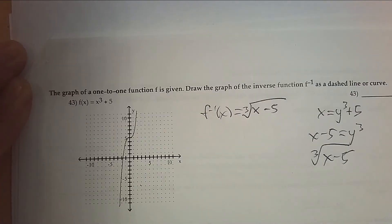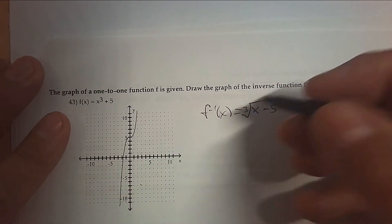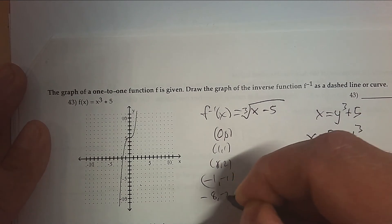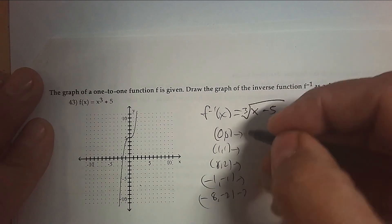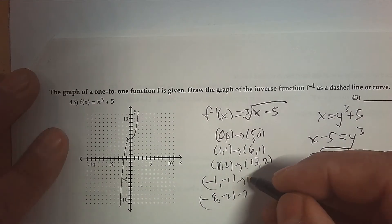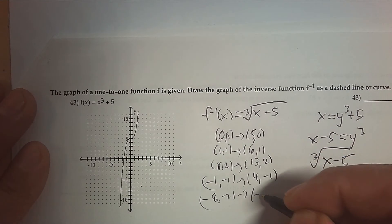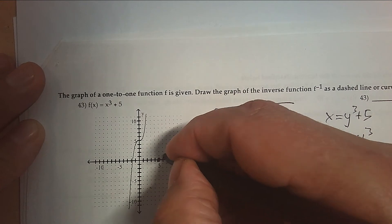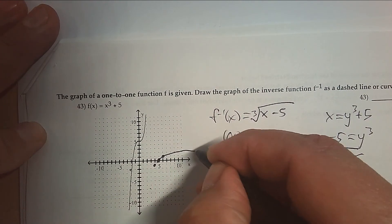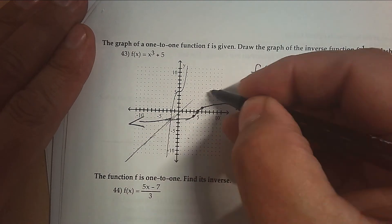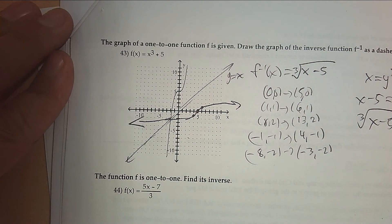A cube root would have parent points (0,0), (1,1), (8,2), (−1,−1), (−8,−2). All we're doing is adding 5 to the x's: so (5, 0), (6, 1), (13, 2), (4, −1), (−3, −2). I'm going to put those on the graph. Remember that the line y = x reflects a function and its inverse, so see how one would fold over the other.